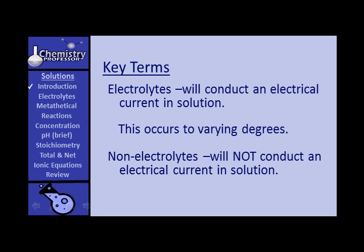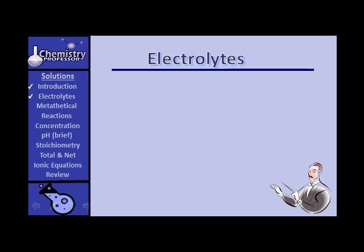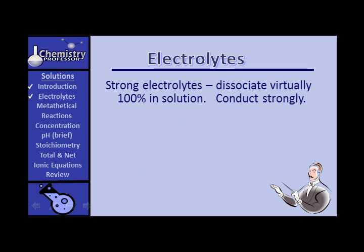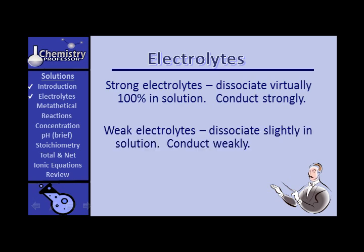Non-electrolytes are substances that will not conduct an electrical current in solution — substances that are just not going to conduct an electrical current even though they may be dissolved. Strong electrolytes dissociate virtually 100% in solution. They separate into their ionic parts in solution, and these ions, moving around in solution, will conduct a current strongly. On the other hand, there are weak electrolytes, which dissociate only partially — usually to a very small extent, sometimes less than 5% — so they don't produce very many ions and hence conduct a current weakly.